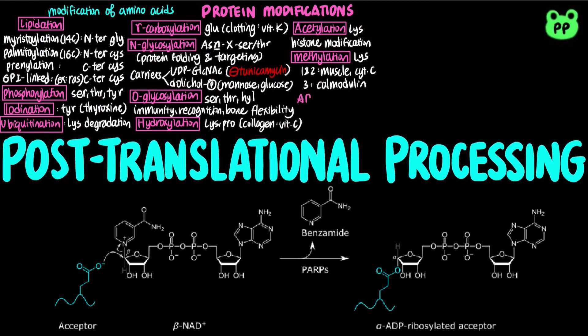ADP ribosylation is the addition of one or more ADP ribosides to a protein, which is important in various cellular processes, including cell signaling, DNA repair, gene regulation, and apoptosis.